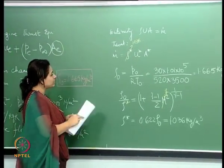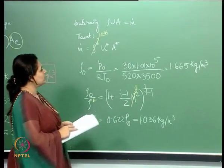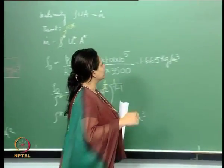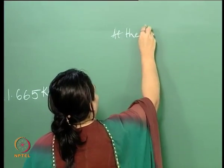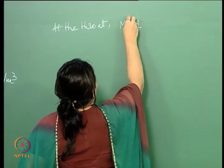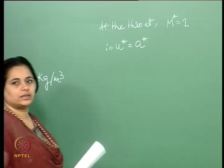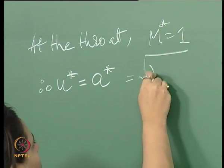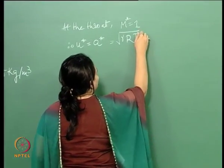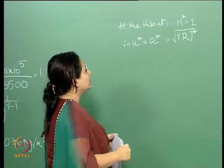Having found rho-star, the next thing is to calculate U-star. At the throat, which is the sonic zone, the Mach number is 1. Therefore, U-star equals the speed of sound, which is equal to sqrt(gamma R T*). The speed of sound at the throat requires T-star, which we still need to find.